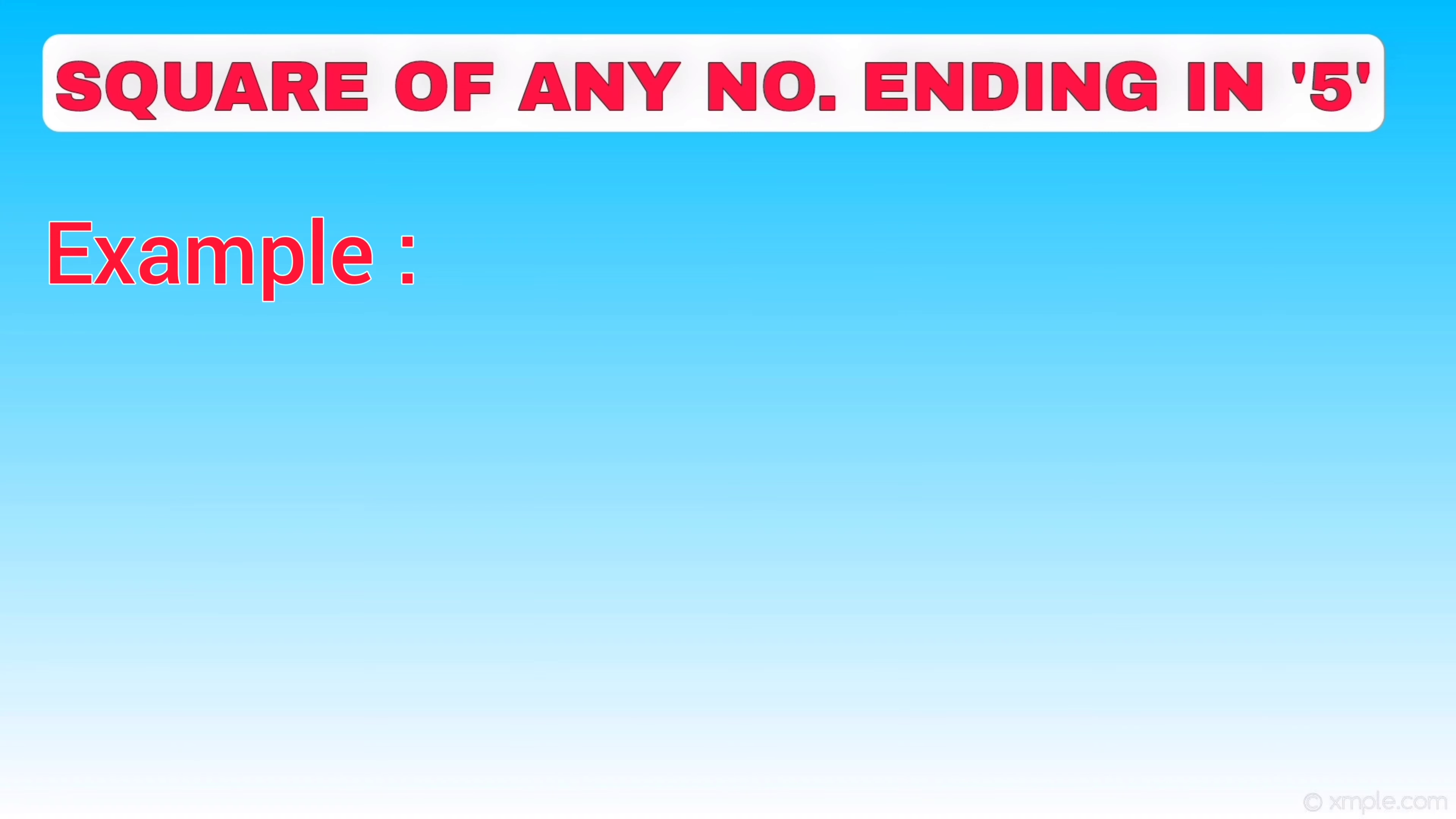Now we try to solve another example, that is 75 square. On the right side, we write down the square of 5, that is 25. On the left part, we multiply 7 by its next number, that is equal to 56.